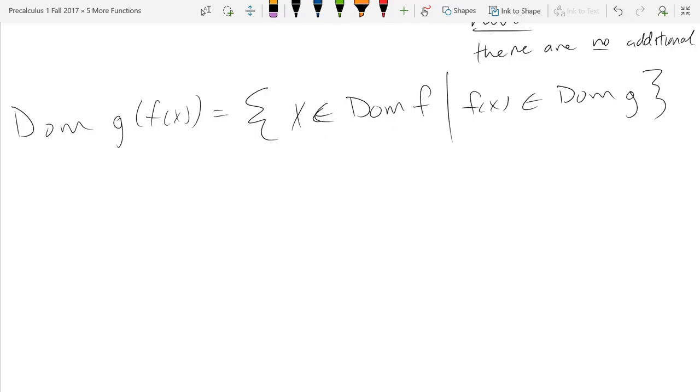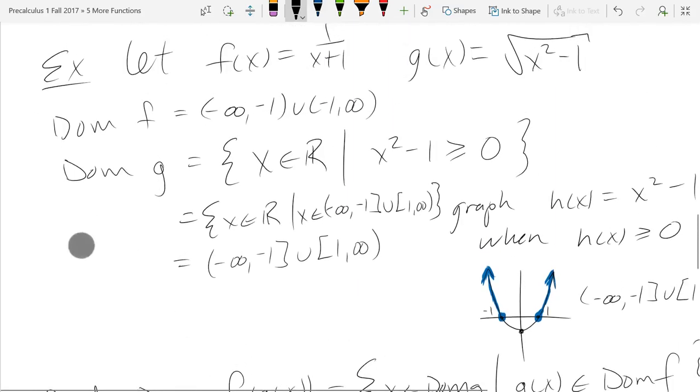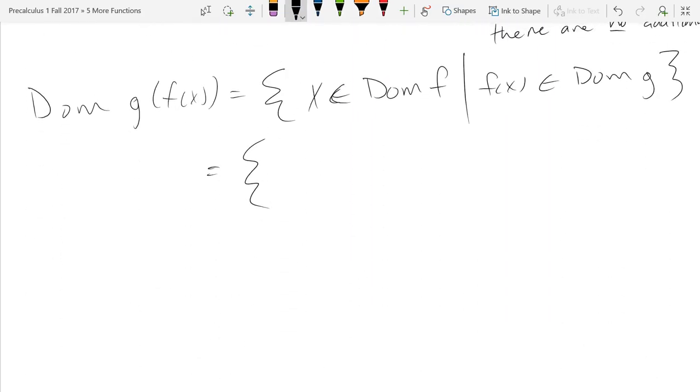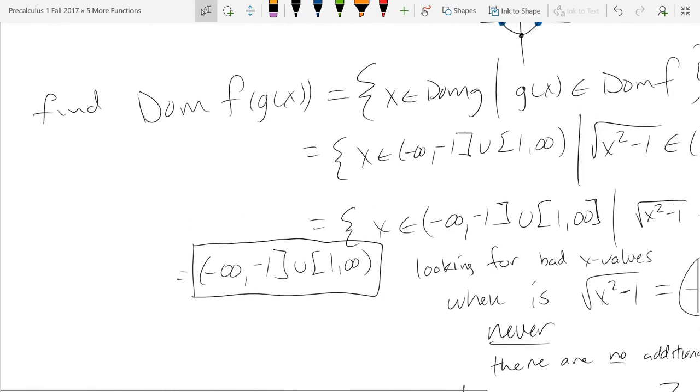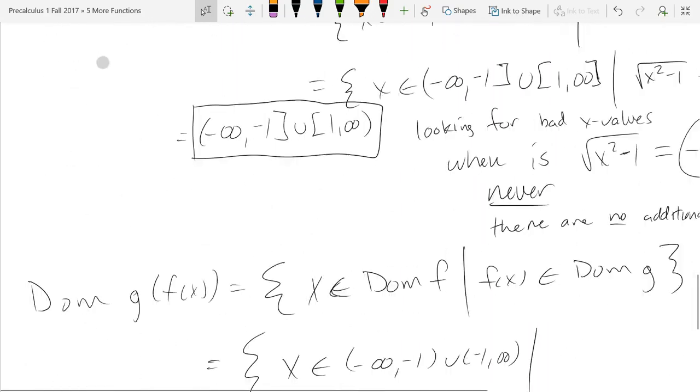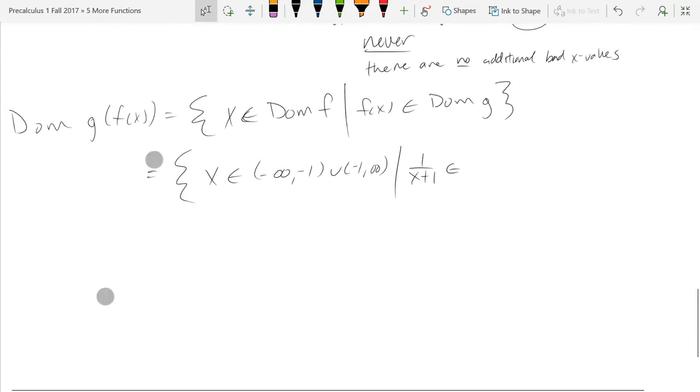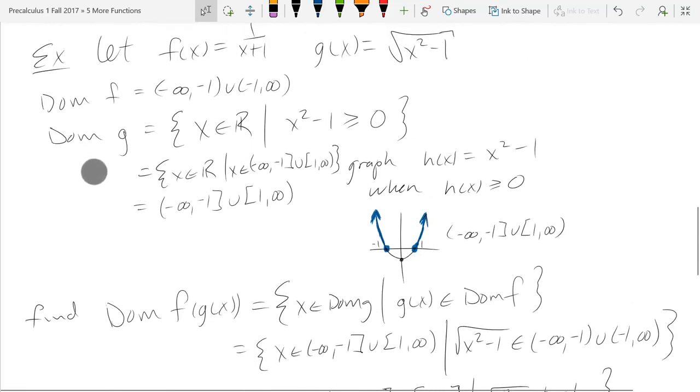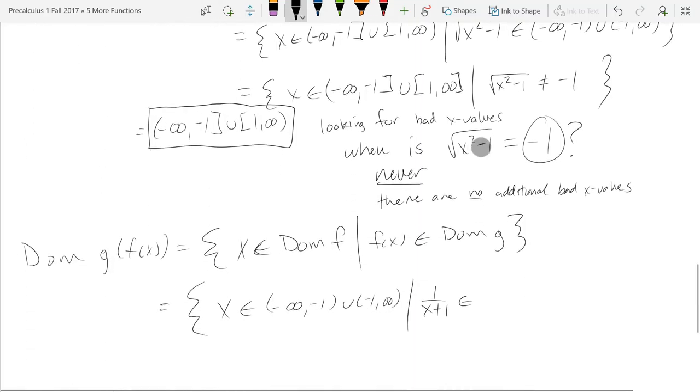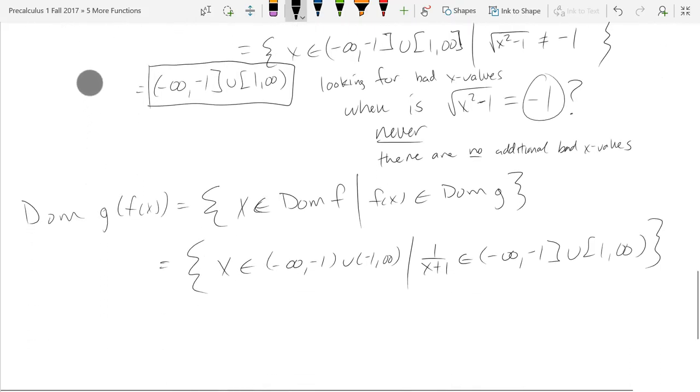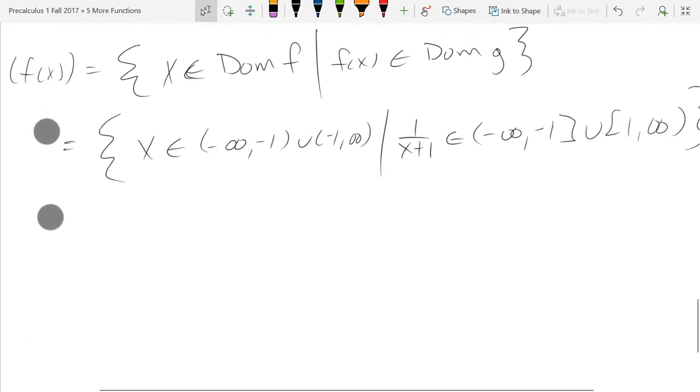Alright, so now we'll write all these things down. We got the individual domains earlier. So domain f is everything that's not negative 1. And the f of x function itself is 1 over x plus 1. And domain of g was negative infinity to negative 1, union 1 to infinity. Alright, so I just wrote down all the actual values for everything in that set.